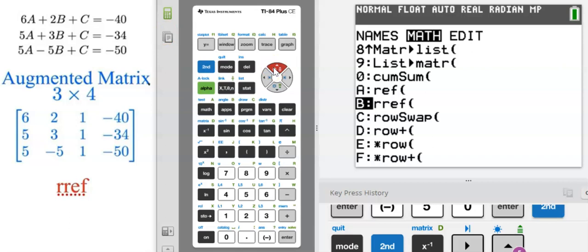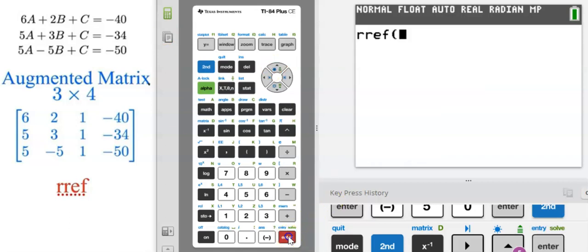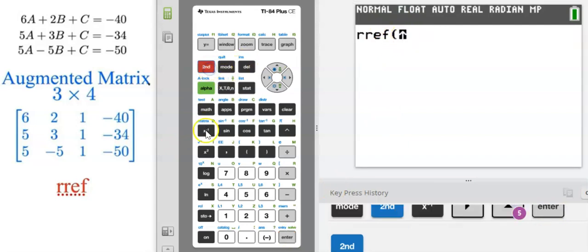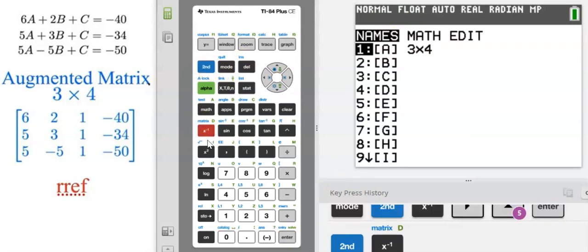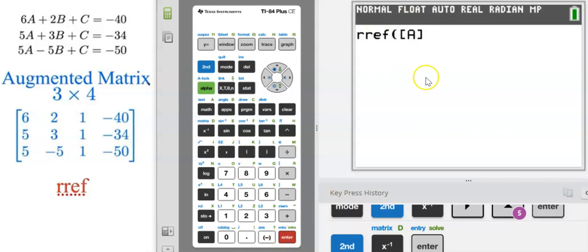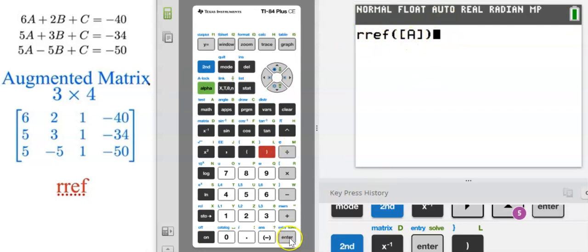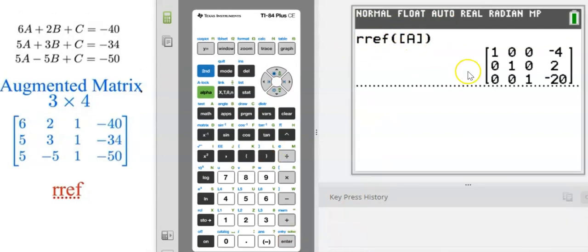Now what matrix do we want to enter? Let's grab it. We're going to go to our matrix menu and enter matrix A. That's the name of our matrix. Now we're going to have the calculator perform the reduced row echelon for matrix A and hit enter.